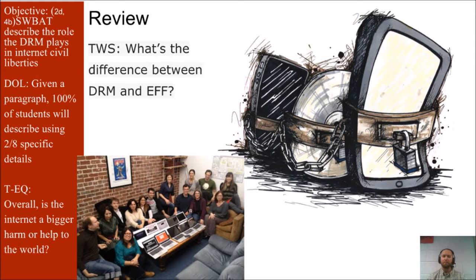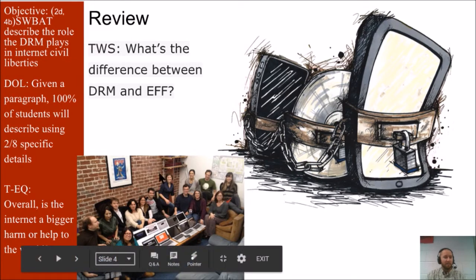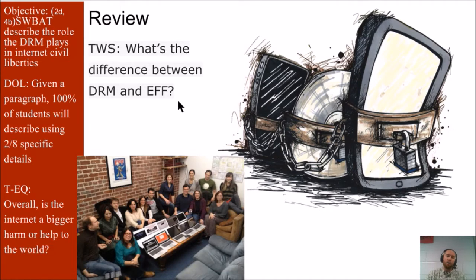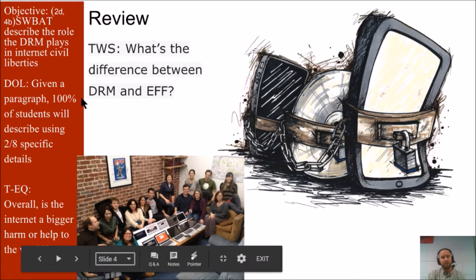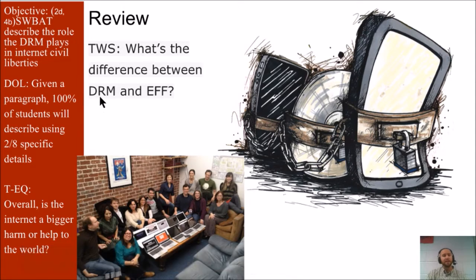What's the difference between DRM and EFF? In yesterday's lesson, you learned about the EFF being an organization, a group who's interested in protecting civil liberties. Now, one way that companies and corporations can protect the content that they put on the Internet is through something called DRM — Digital Rights Management.